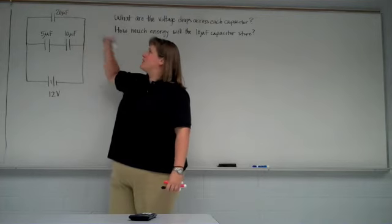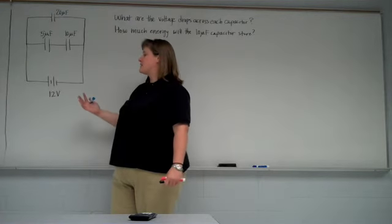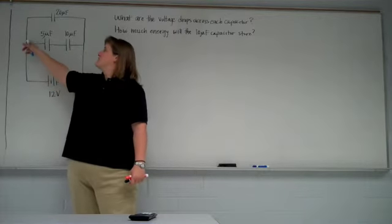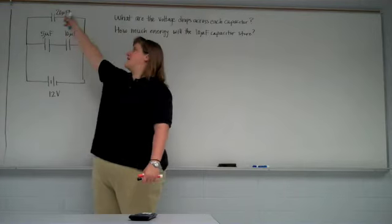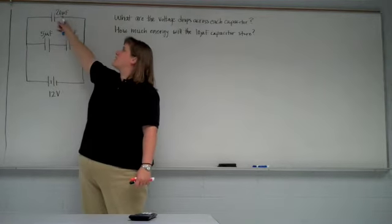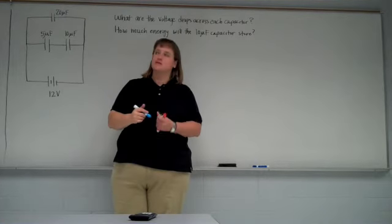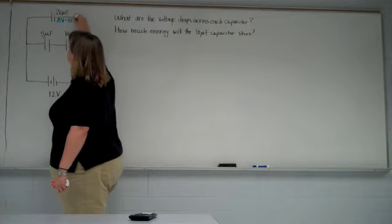Since in the top line we only have one capacitor, the 20 microfarad capacitor, you think about energy, if the battery is putting in 12 volts, and the only thing in the path, if we trace the outside loop of the circuit, the only thing in the path is that 20 microfarad capacitor. It has to take out all 12 volts. So delta V for this capacitor is 12 volts.